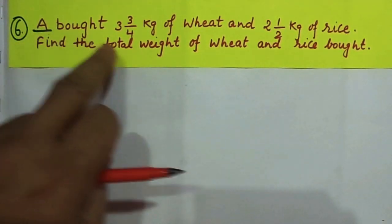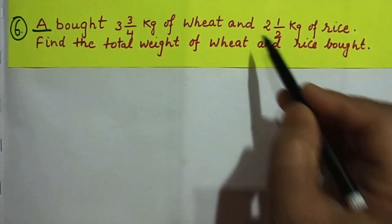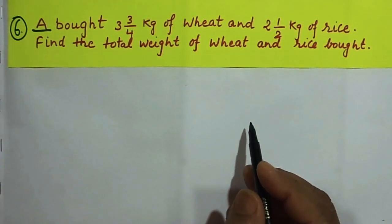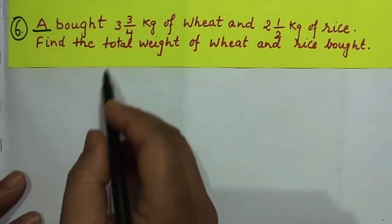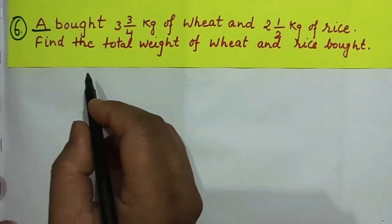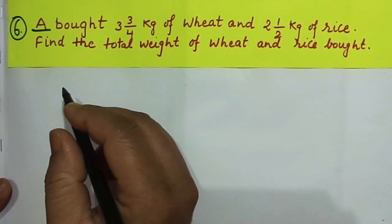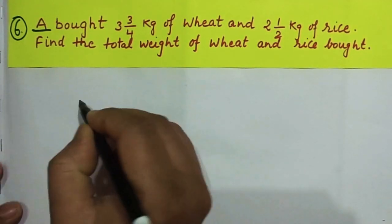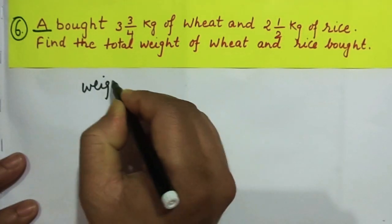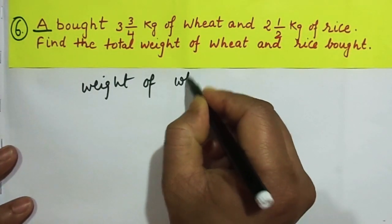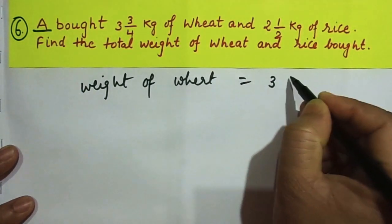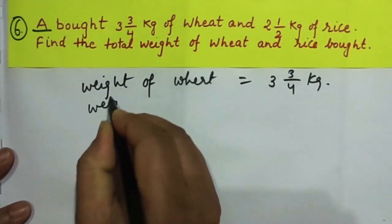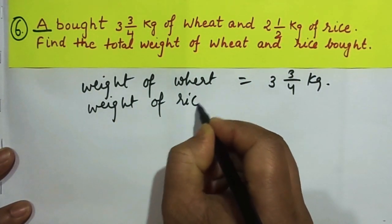The first question states that a person bought 3 and 3/4 kg of wheat and 2 and 1/2 kg of rice. Find the total weight of wheat and rice bought. Since it's a word problem, you will be describing your work. Weight of wheat will be 3 and 3/4 kg.